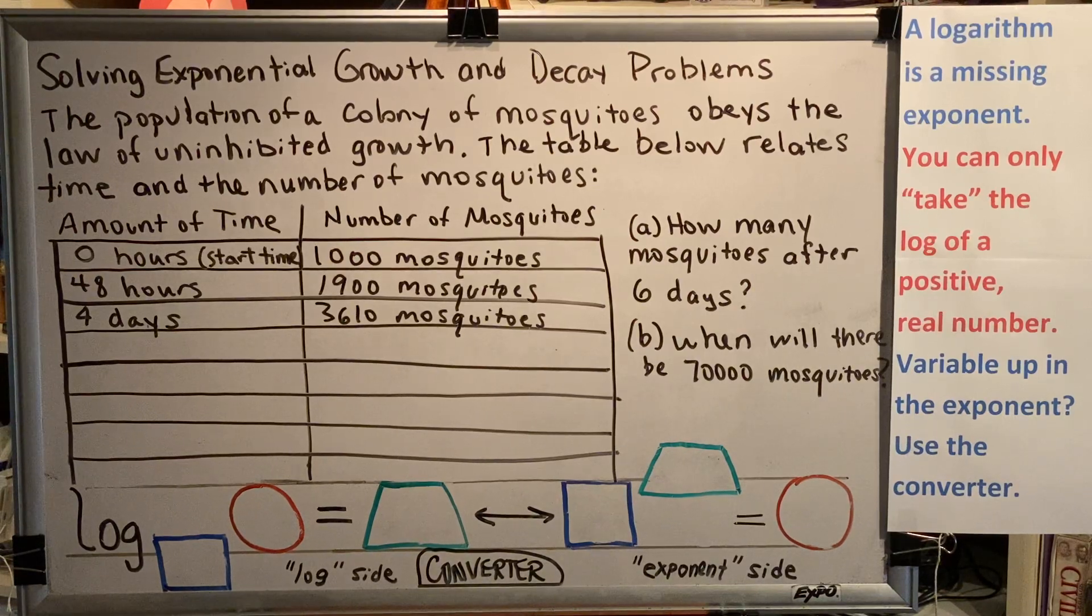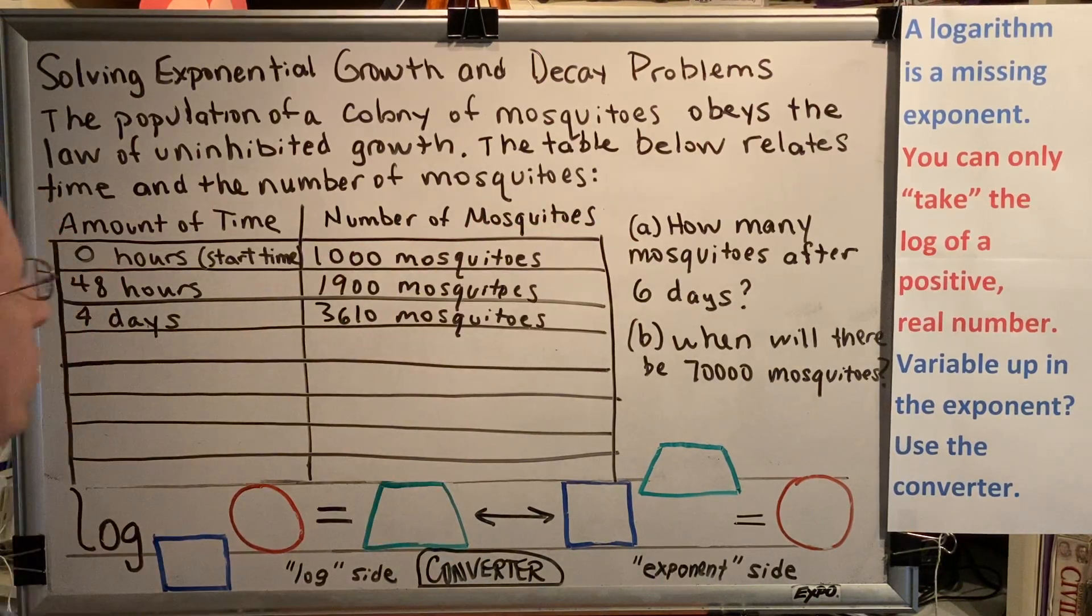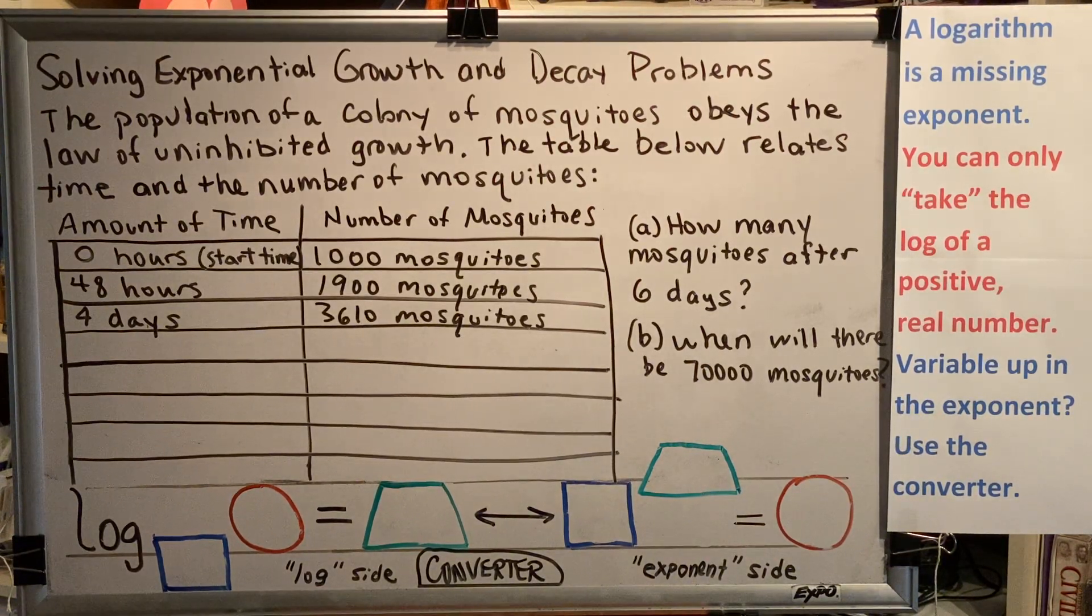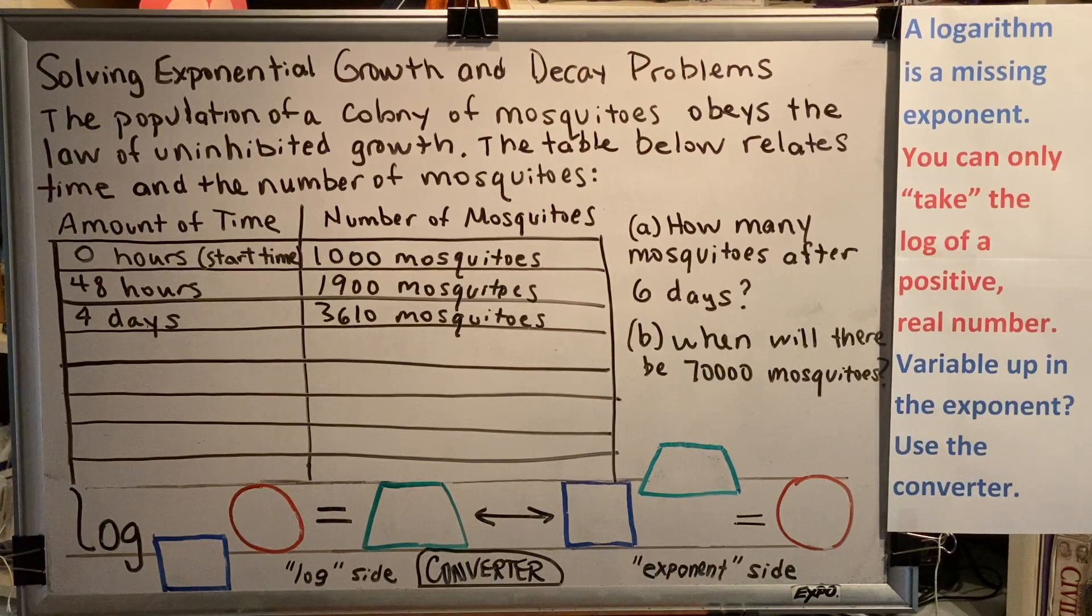There are two questions. Part A, how many mosquitoes will there be after six days? And part B, when will there be 70,000 mosquitoes? So let's begin by solving this problem with the patterns method.